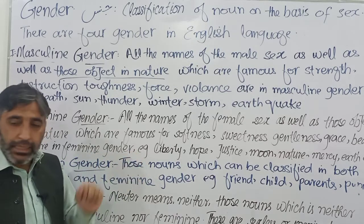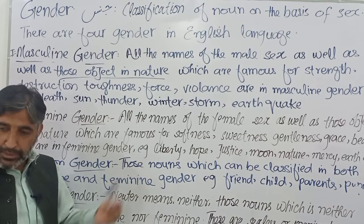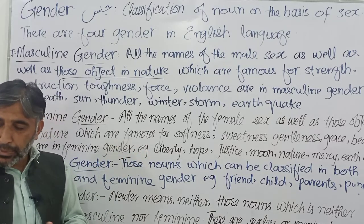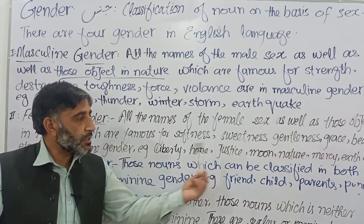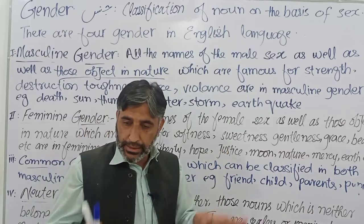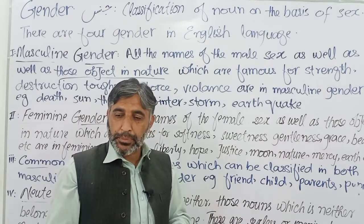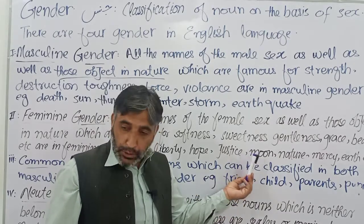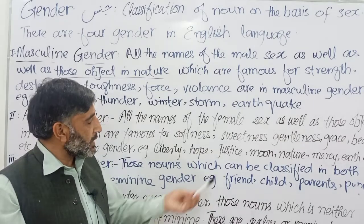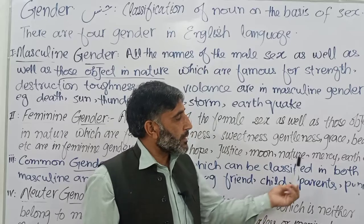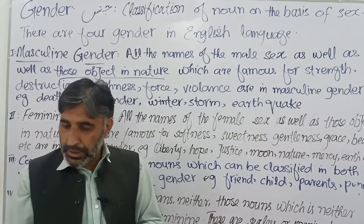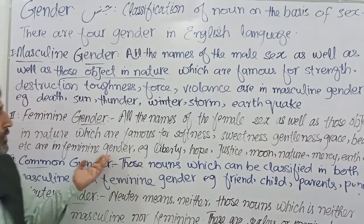For example: liberty, hope, justice, moon. Jaise 'The moon spread her beams of light' — yahan moon ke liye 'her' istemal ki gayi hai kyunki yeh feminine gender ke taur par istemal hoti hai. Isi tarah nature, earth, mercy — yeh bhi feminine gender ke taur par poetry aur baz awqat aam istemal mein bhi aate hain — jo narmi zahir karte hain.